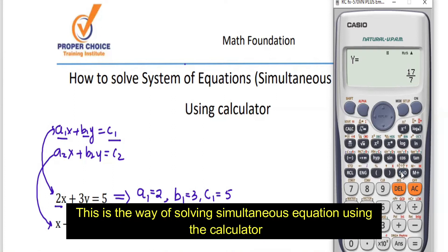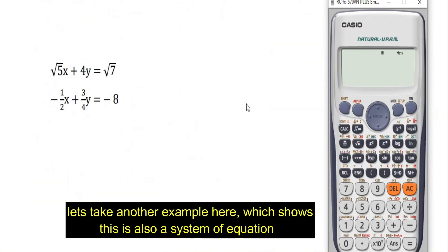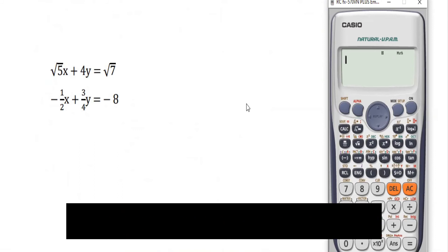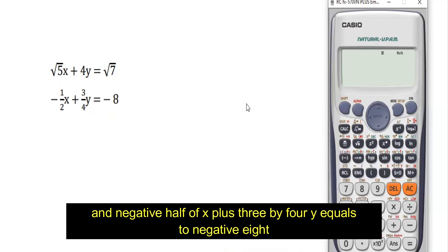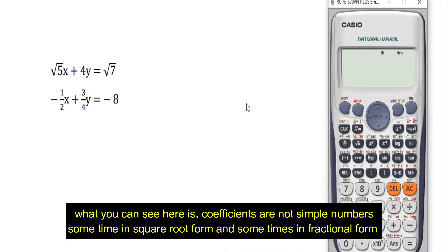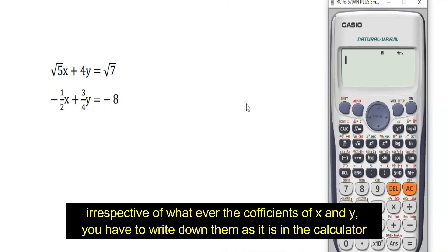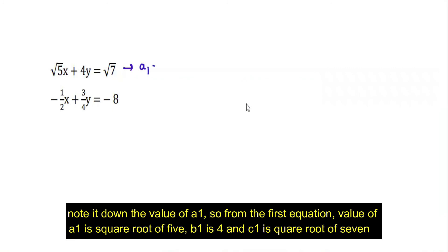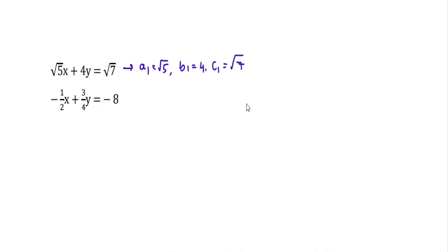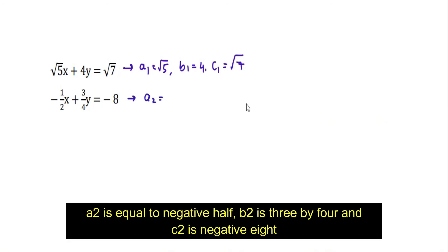This is how you solve simultaneous equations using the calculator. Let's take another example: √5·X + 4Y = √7 and −(1/2)X + (3/4)Y = −8. Here the coefficients are not simple numbers — they are in root or fractional form. Irrespective of that, you just identify the constants: A1 = √5, B1 = 4, C1 = √7, A2 = −1/2, B2 = 3/4, C2 = −8.